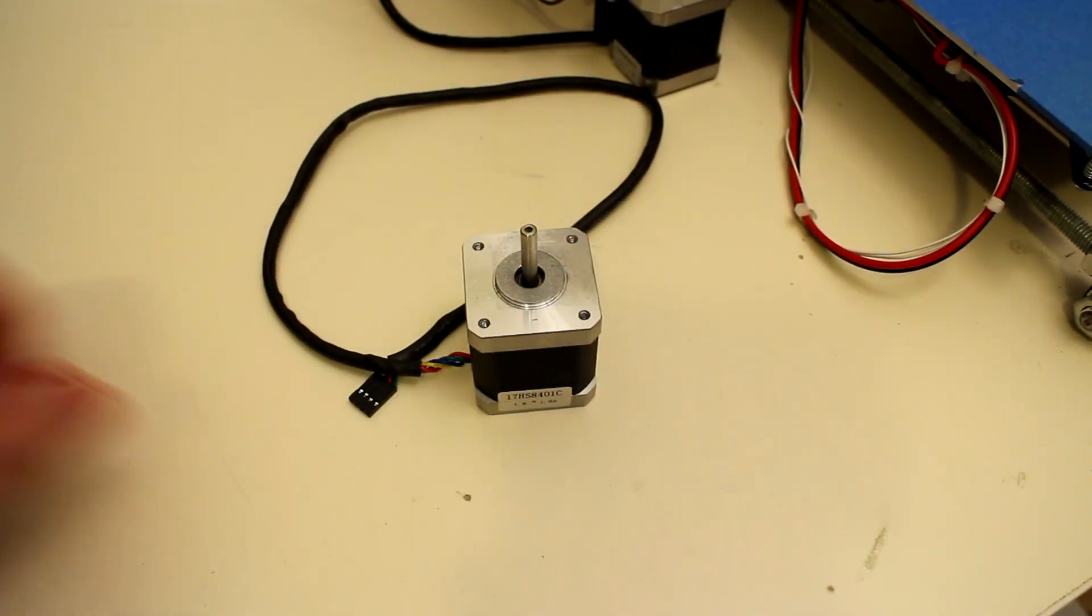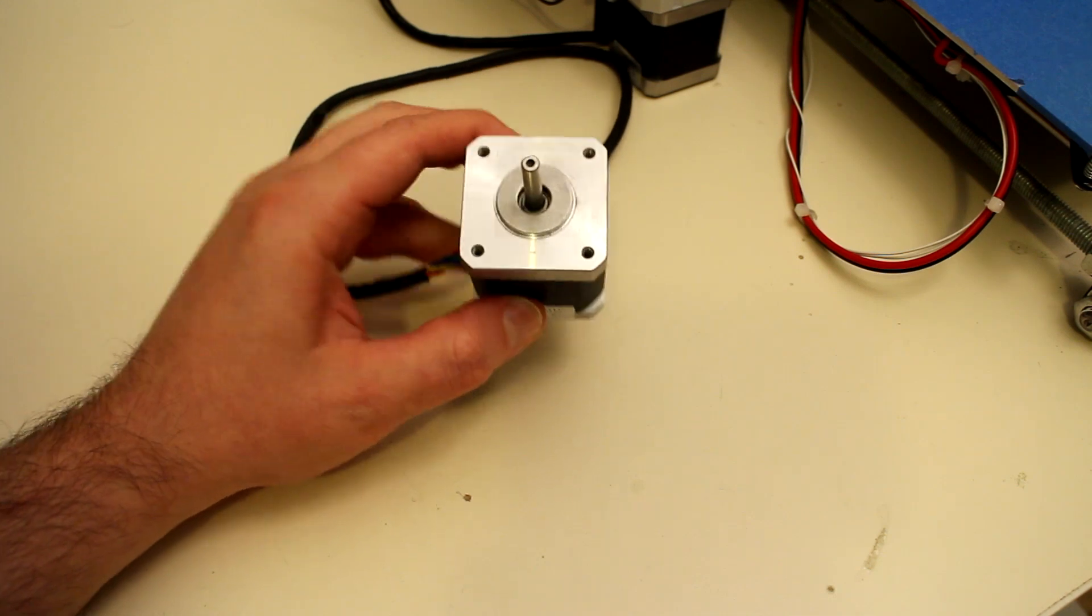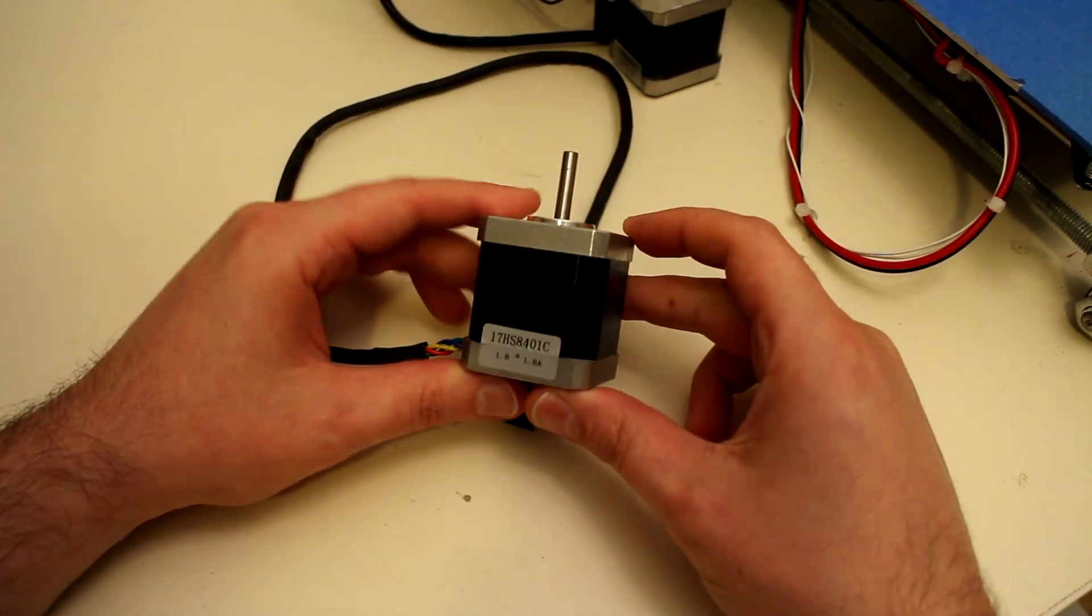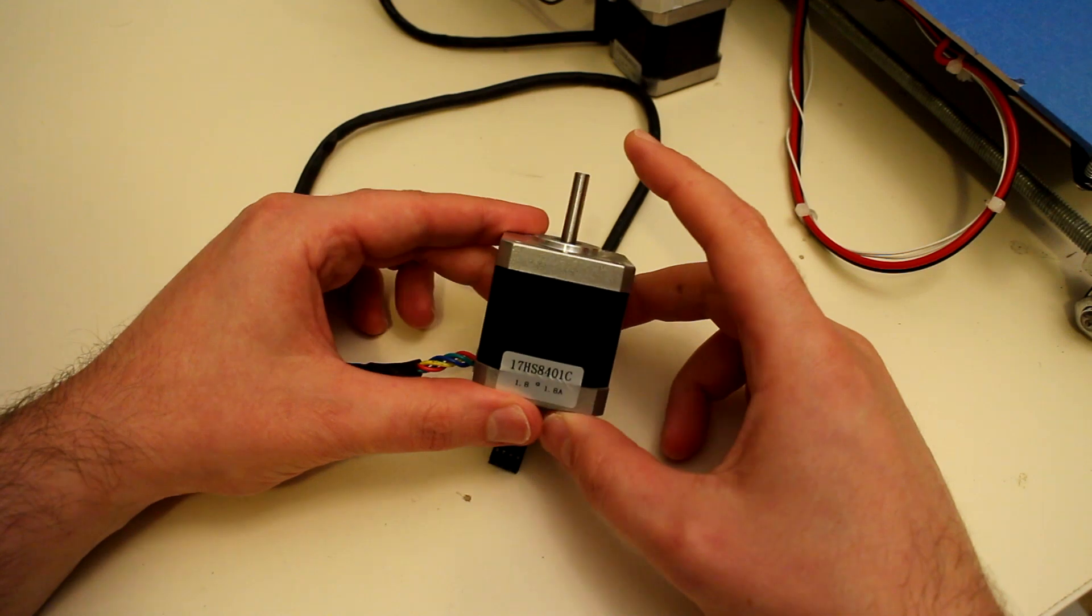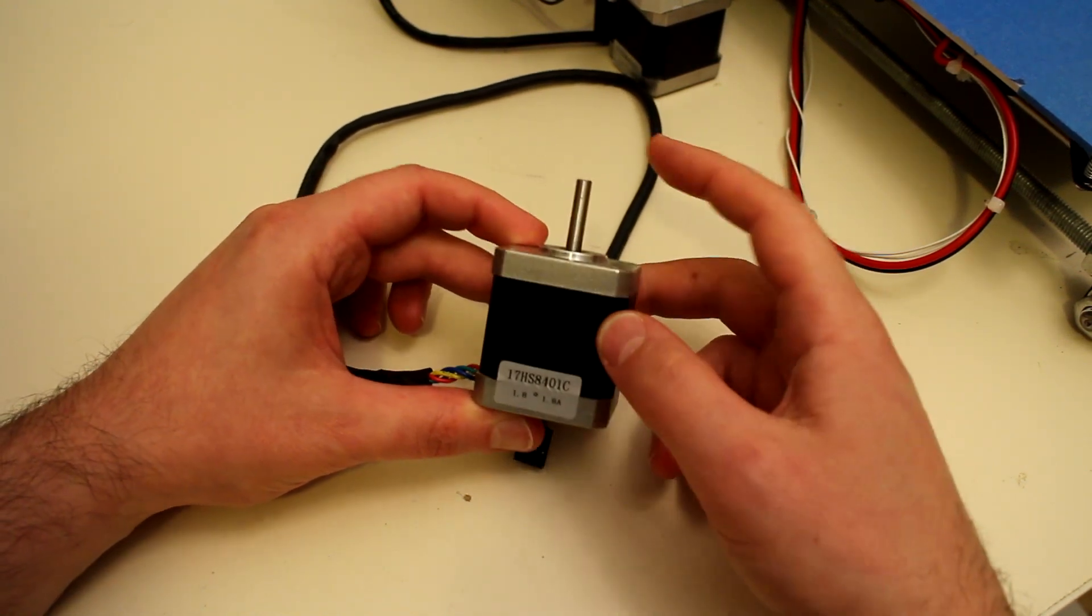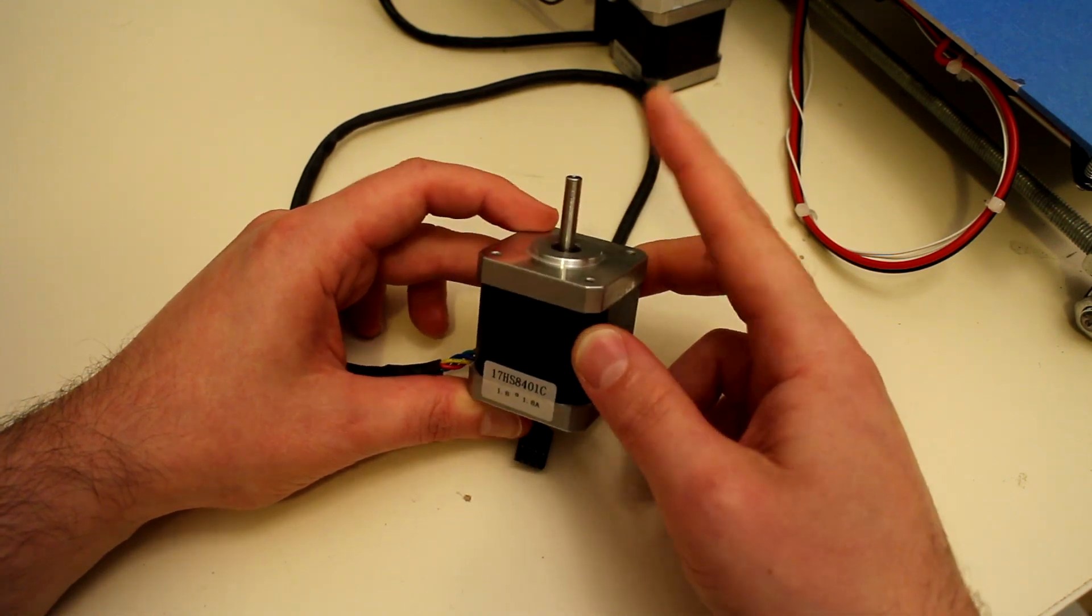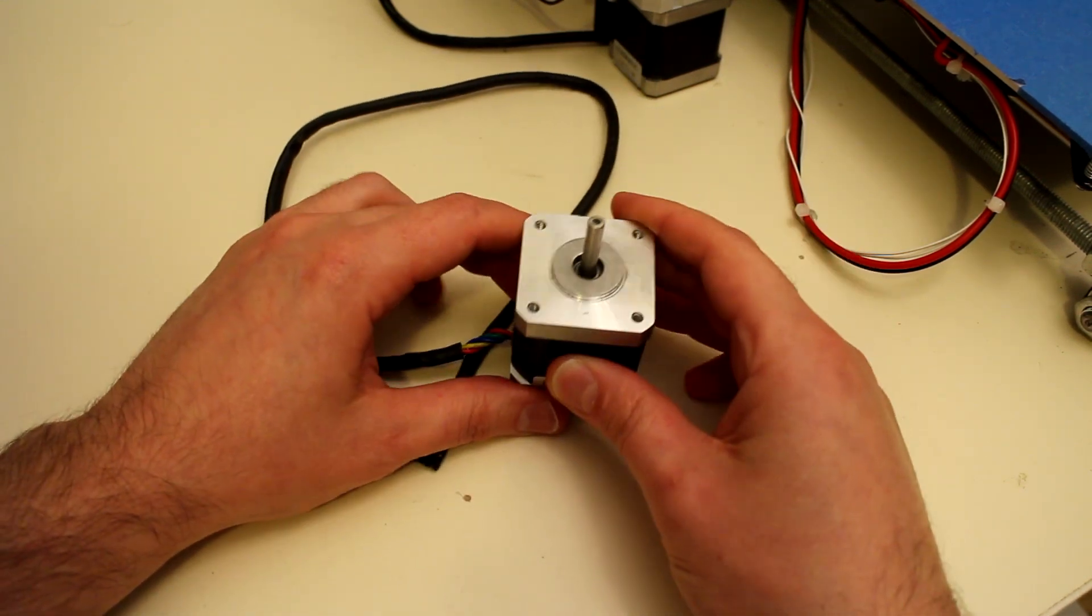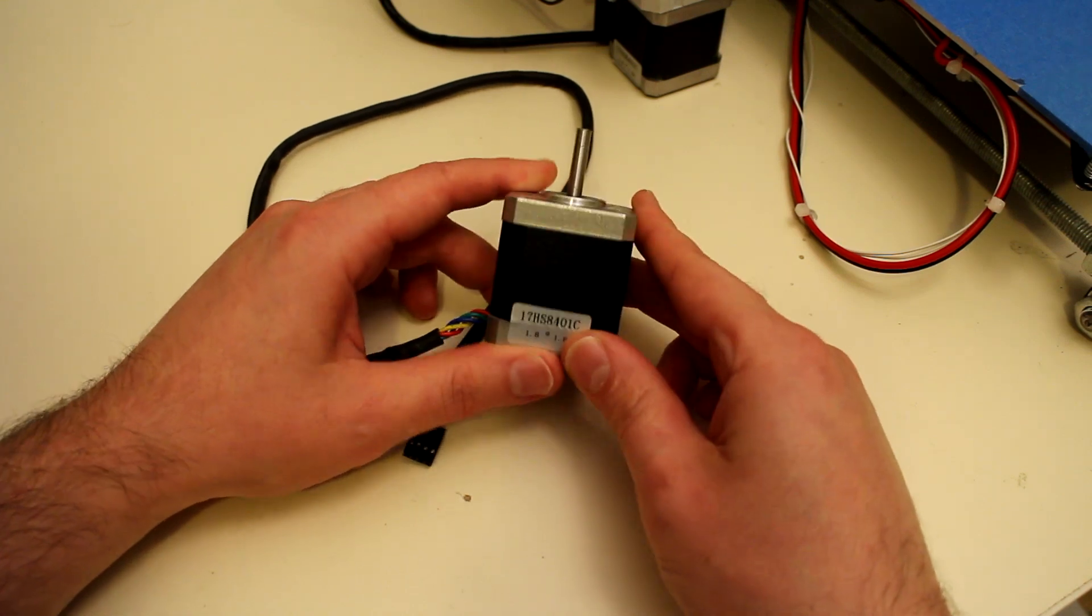Starting at the base of the Z-axis we have the stepper motors. One thing to check with any stepper motor on your 3D printer is to ensure that the shaft is dead straight. You don't want a bent shaft on your stepper motor. I've been caught out with this before and it seems I've been caught out again.